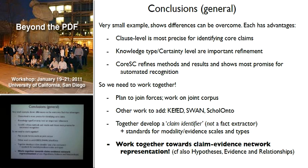Pointing to Marianne's work this morning — if you had papers marked up with this, it might be useful. We are in collaboration with Gully on KFED, talking with Tim Clark on SWAN and also the Scolanto. Together it's very useful if we can try to overlay all these annotations to collectively come to a claim identifier. I strongly resist the term 'fact extraction' — the best you can do in science is identify claims. We should develop standards for the modality and evidence scales and types so that collectively we can work towards a claim-evidence network, surveying the literature and seeing how assertions are carried forward.